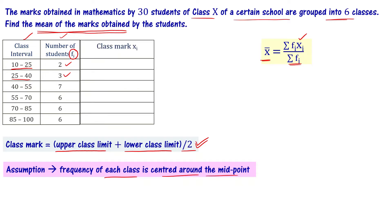Class mark xi = (upper class limit + lower class limit) / 2. So the first class mark is (10 + 25) / 2 = 17.5. Next is (25 + 40) / 2 = 32.5. Then (40 + 55) / 2 = 47.5.